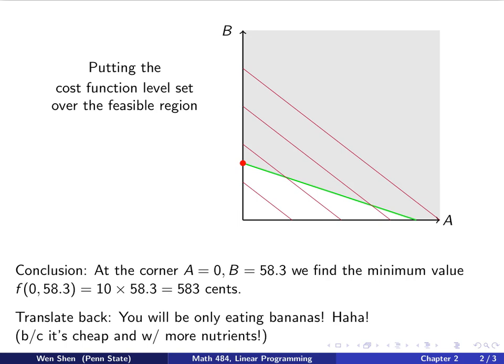We can translate it back into plain English, into the model that we started with, the diet model. So what does that solution say? The solution says if you only eat apples and bananas with the given information, with the price and the nutrients, and you want to minimize your cost, you will be only eating bananas.